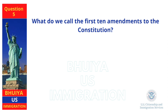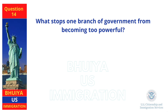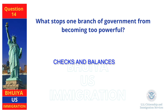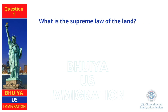Nine. What do we call the first 10 amendments to the Constitution? The Bill of Rights. What stops one branch of government from becoming too powerful? Checks and balances. What is the supreme law of the land? The Constitution.